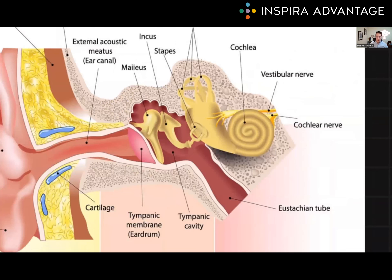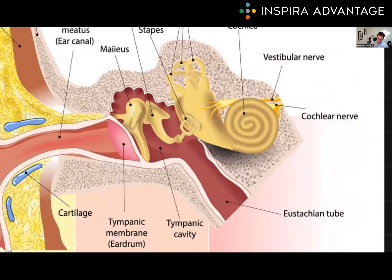The middle ear is located between the eardrum and the inner ear. It is connected to the nasal cavity by the Eustachian tubes, which help to equalize pressure on both sides of the eardrum. The middle ear contains three small bones called the ossicles: the malleus, the incus, and the stapes — also known as the hammer, anvil, and stirrup. The ossicles amplify the vibrations from the eardrum and transmit them to the inner ear. The malleus is attached to the eardrum while the stapes rests on the oval window of the cochlea, which is part of the inner ear.